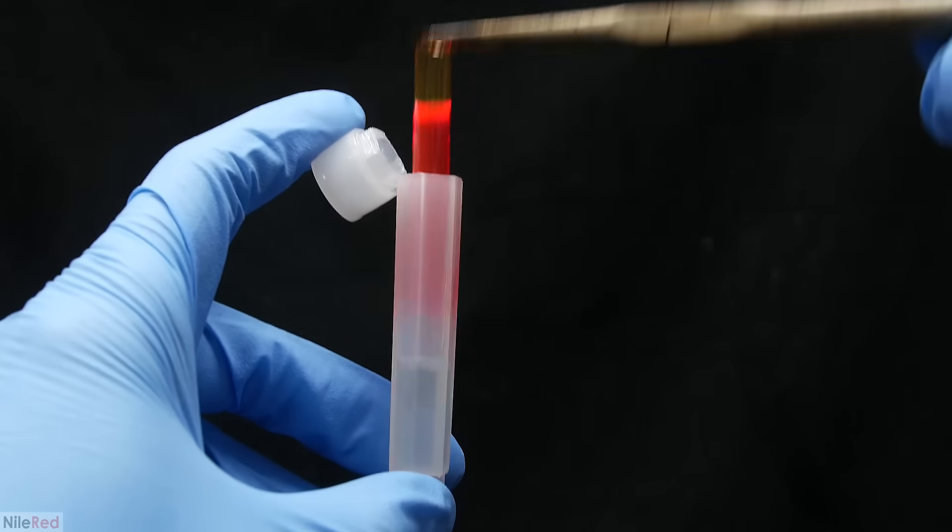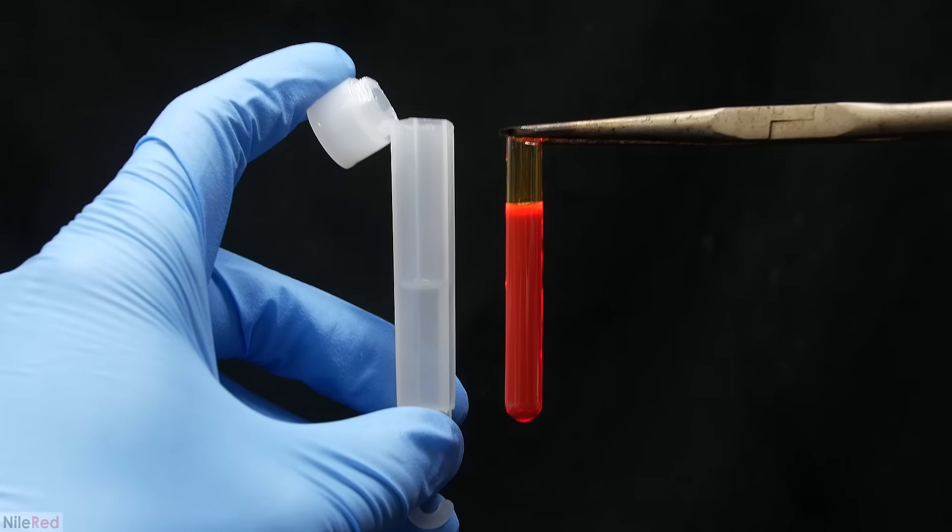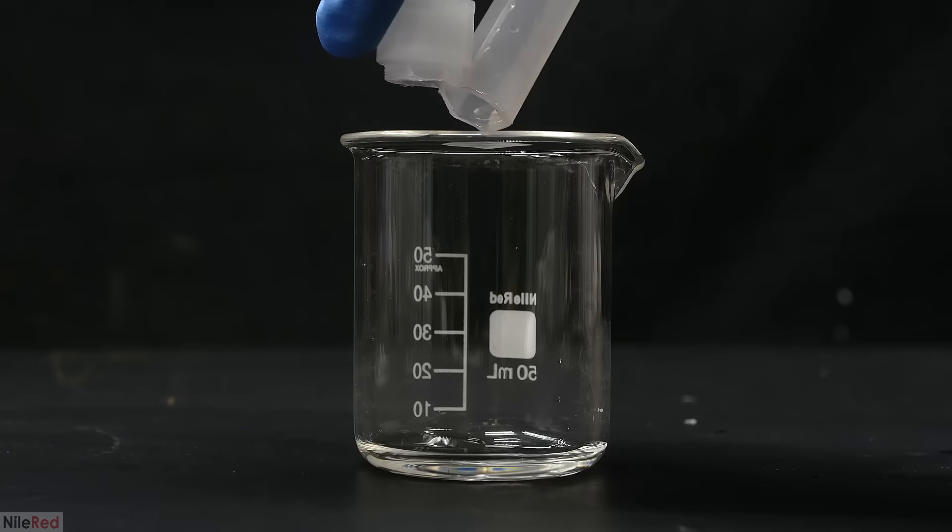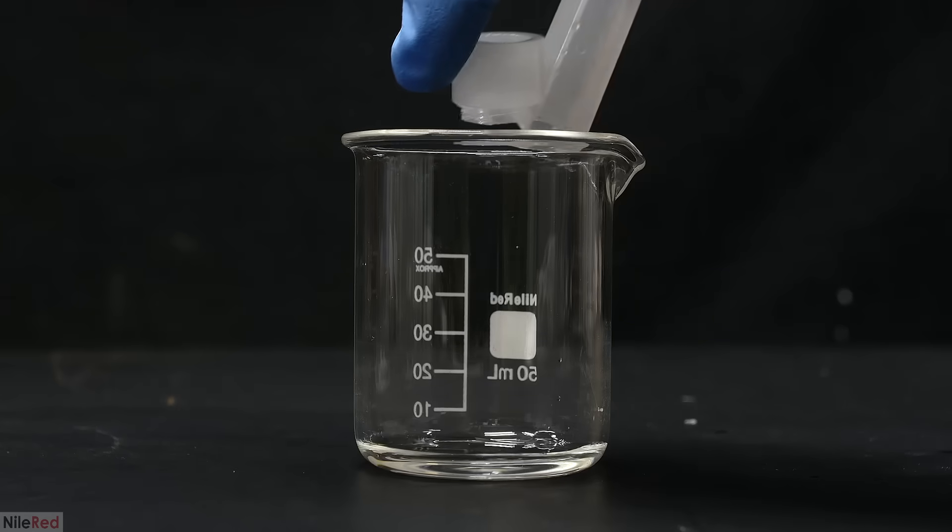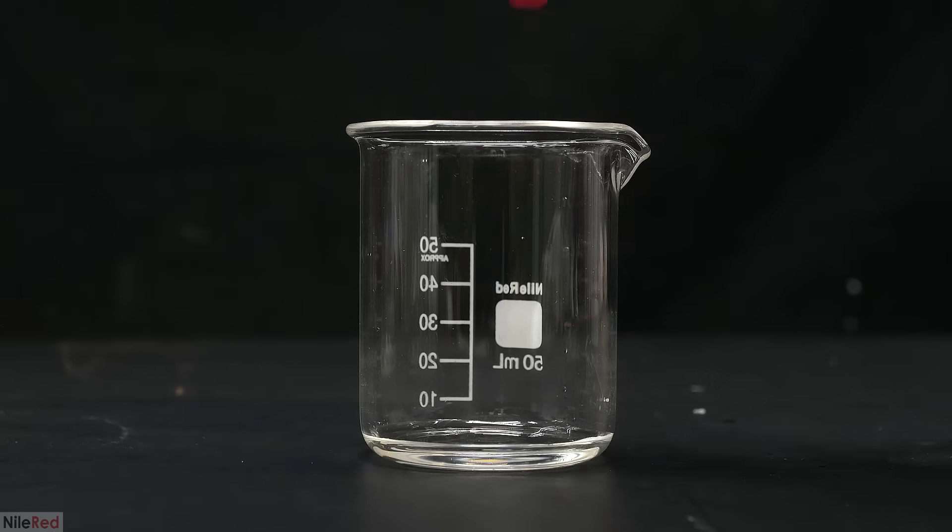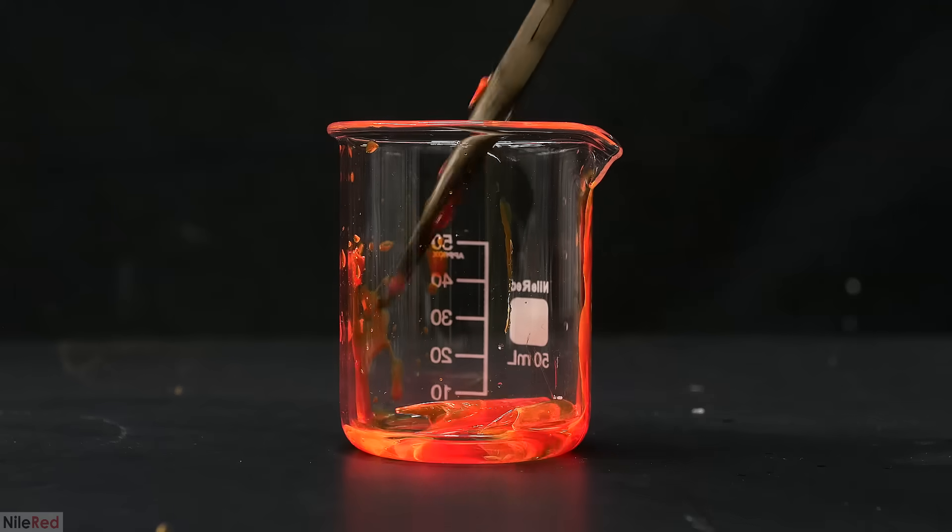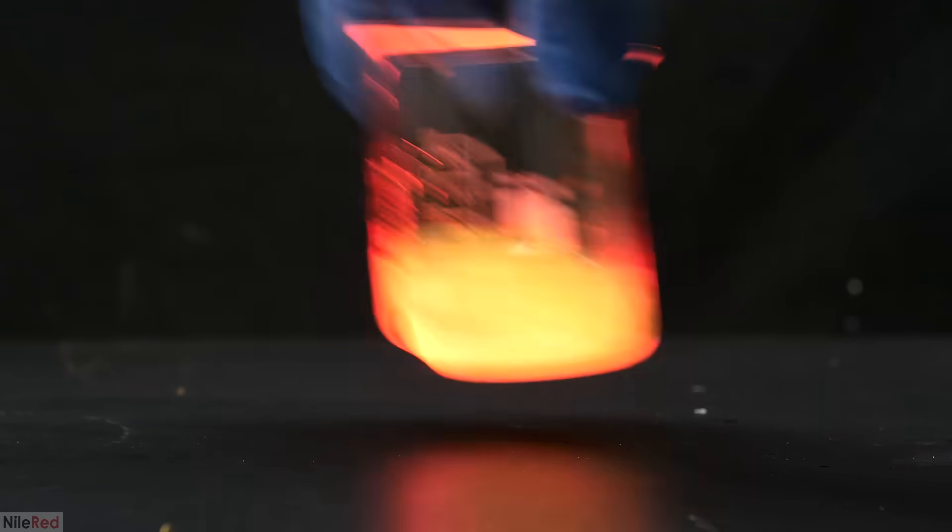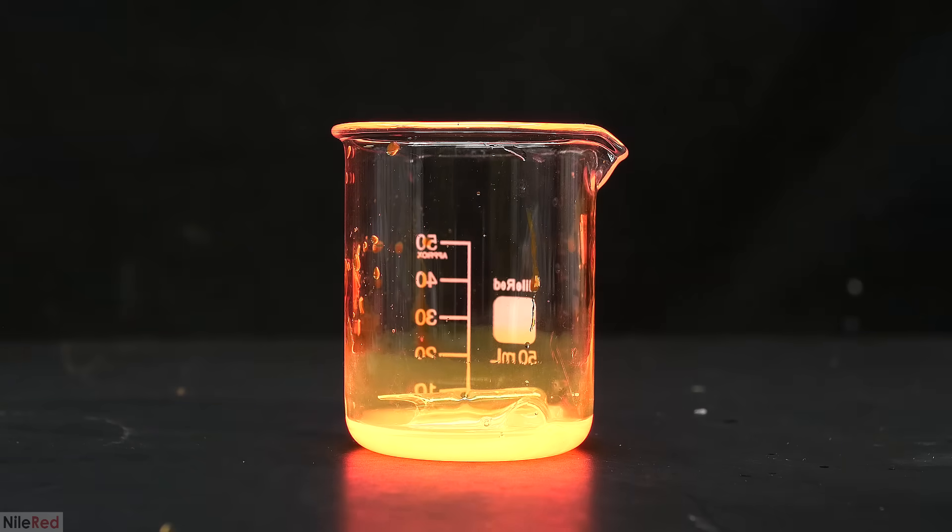A fresh glow stick contains two chemical mixtures that have been kept separated. One is held by the outer plastic casing, and the other is held by the glass tube in the middle. When the inner tube is cracked, its contents are released and everything is allowed to mix. This leads to a chemical reaction and the release of light.